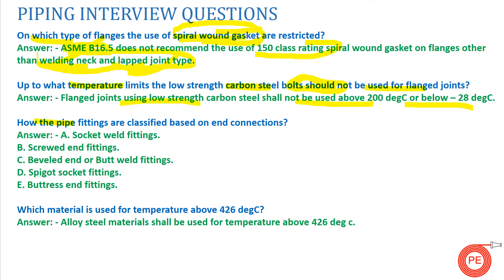The next question is: how are piping fittings classified based on end connections? Based on end connections, fittings can be classified as socket welded fittings, screwed end fittings, beveled end or butt weld fittings, spigot socket fittings, and buttress end fittings. For sizes DN 40 and smaller, we use socket weld or screwed fittings; for larger sizes, we go for beveled end fittings.